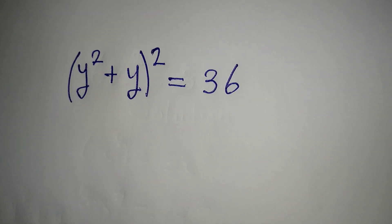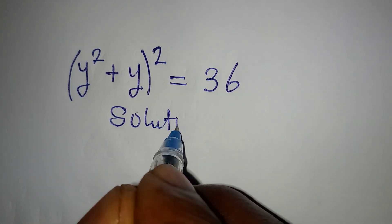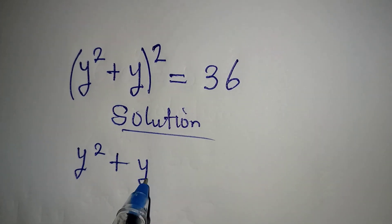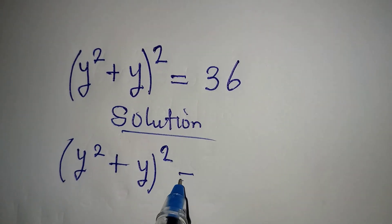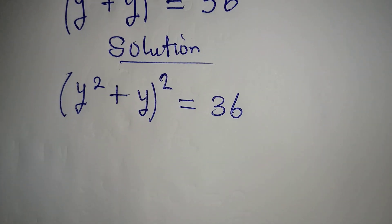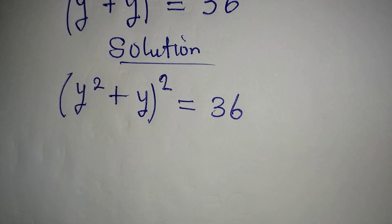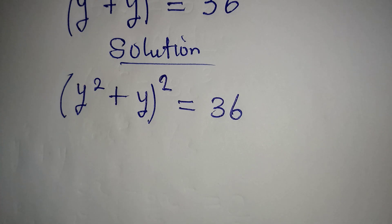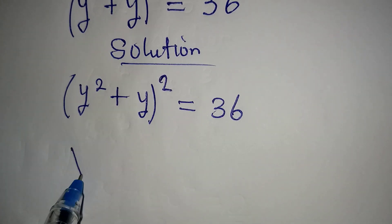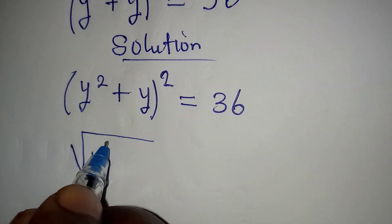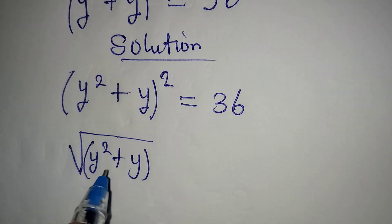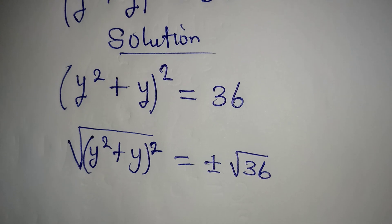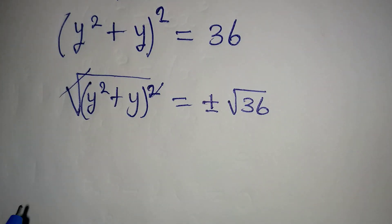Let's provide the solution to this problem: (y² + y)² equals 36. From here we can take the square root of both sides. So if we take the square root of both sides, we shall have the square root of (y² + y) raised to the power of 2 equal to a positive or negative square root of 36.